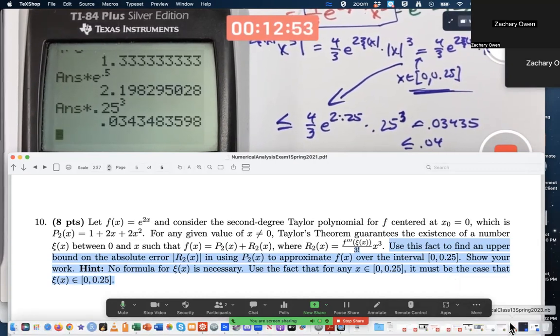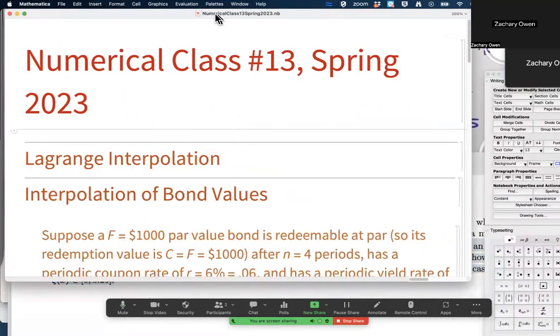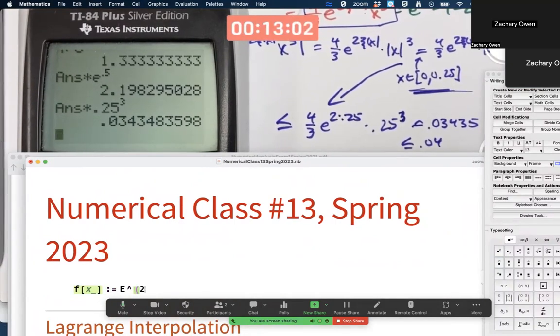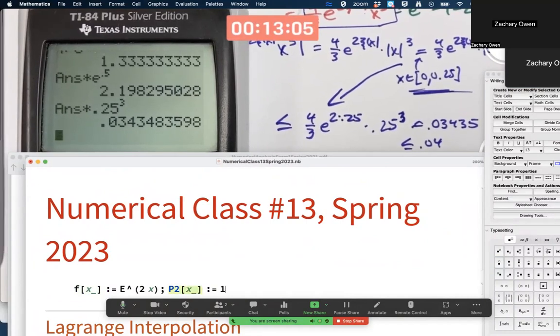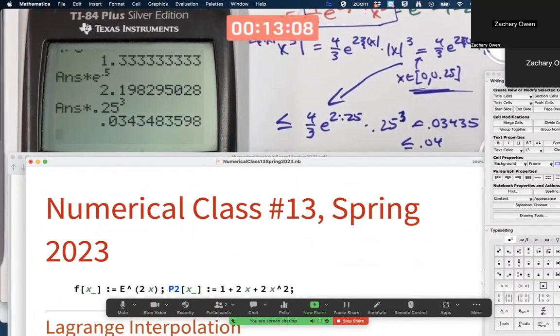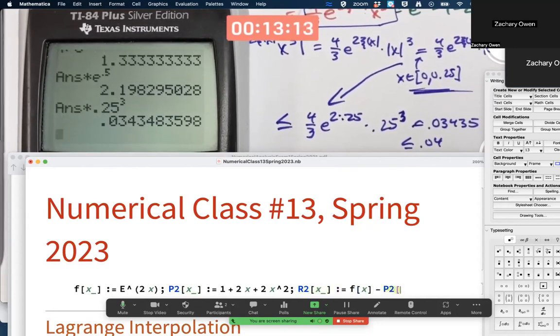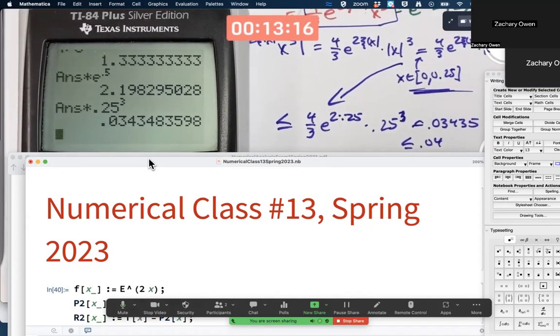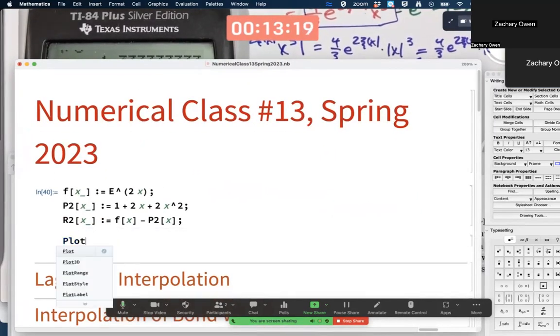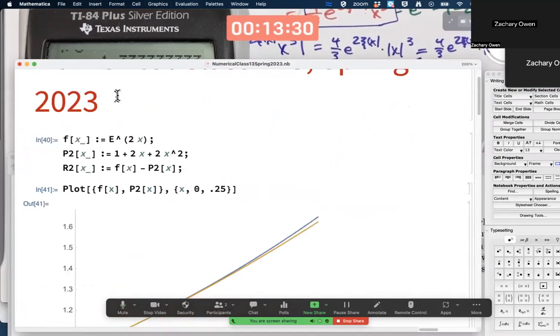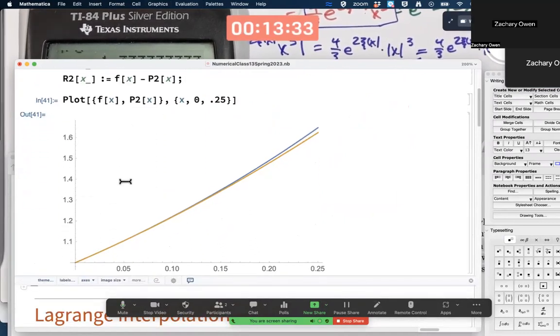Let's try to confirm that here. Graphically, f of x is e to the 2x. p2 of x is 1 plus 2x plus 2x squared. r2 of x, if I just type it in as f of x minus p2 of x, it can still be graphed. Let's plot. Let's plot just f of x and p2 of x first and see that they look close together. Yeah, they look pretty close together.